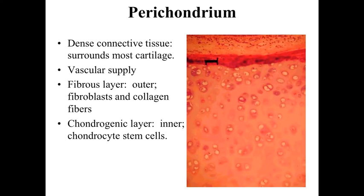Surrounding the cartilage tissue we have a perichondrium — 'peri' for around, 'chondri' for cartilage. The perichondrium is basically a dense connective tissue surrounding the cartilage and helping to connect it to surrounding tissues and organs. Within the perichondrium there is a very rich vascular supply — larger blood vessels and many capillaries — because the blood supply stays within the perichondrium, and materials diffuse from those blood vessels into the cartilage, while waste materials from the cartilage diffuse out into the perichondrium to be picked up and transported away.